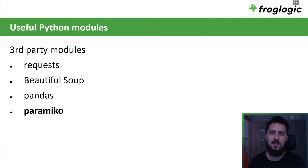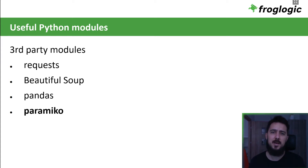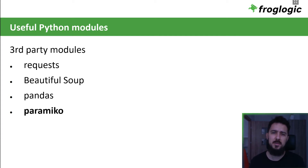Do you need to send HTTP requests to a REST API? No problem — install the requests package. Do you need to pull data out of an HTML or XML file? There is BeautifulSoup. Something to analyze complex data? Please install Pandas. Do you need to execute a command over SSH on a remote machine? You can grab Paramiko. Of course, these are just examples — the same goal can be achieved with different tools.